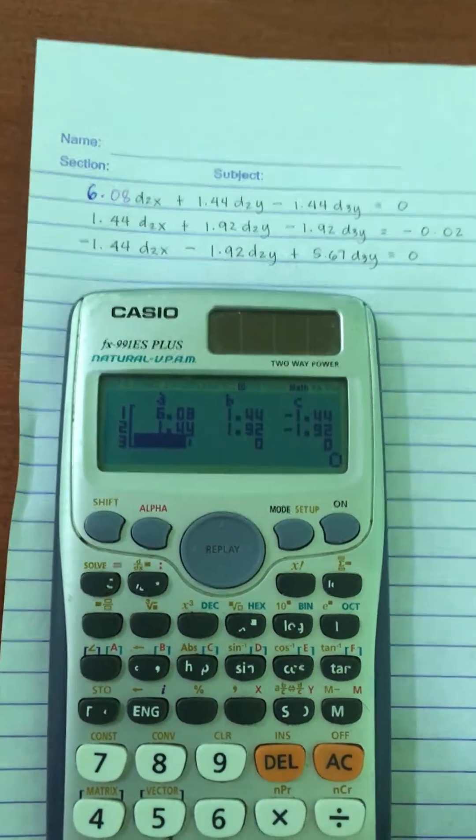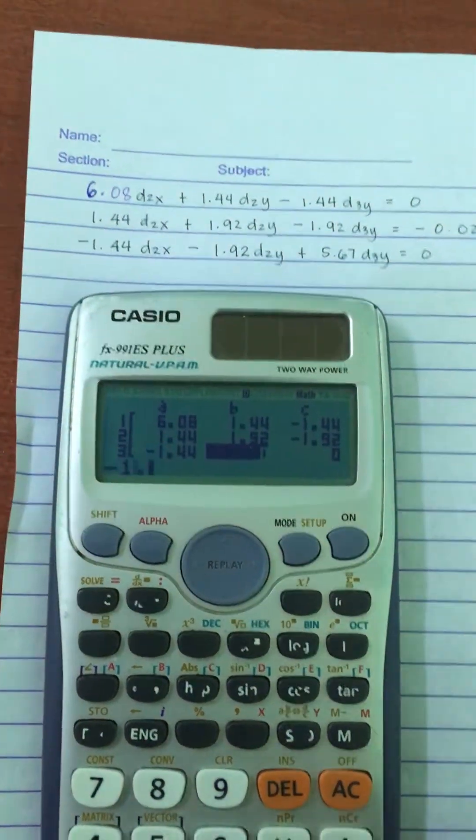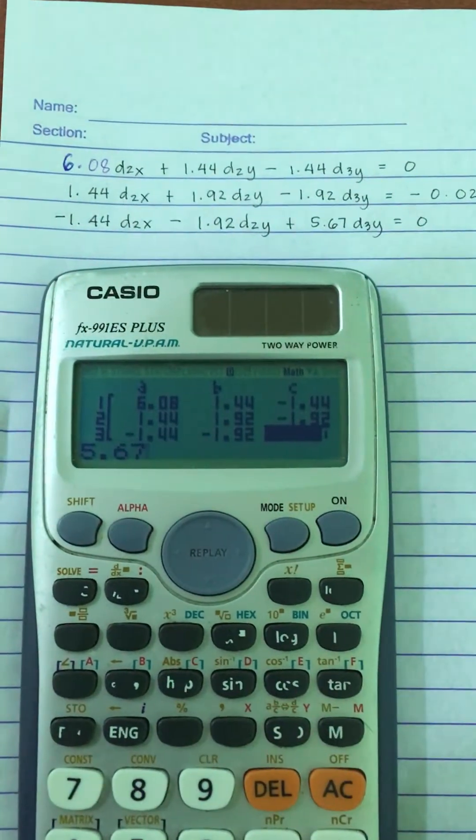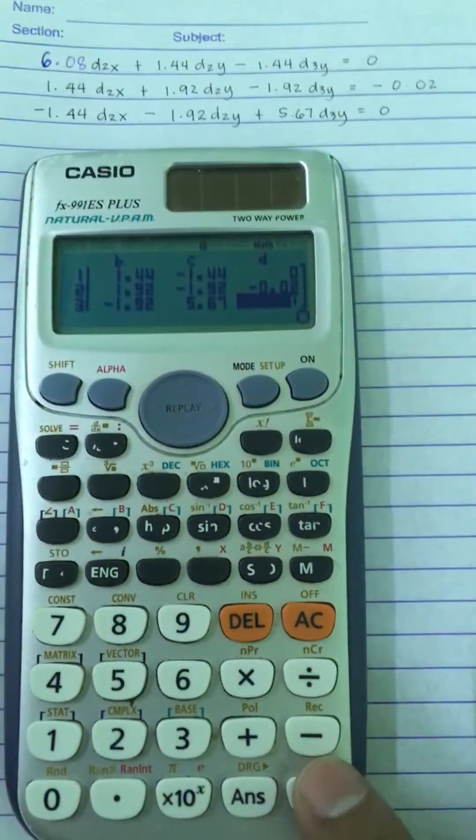And then we go to the third equation, we have negative 1.44, negative 1.92, 5.67, and then 0. And then we just press equal sign again.